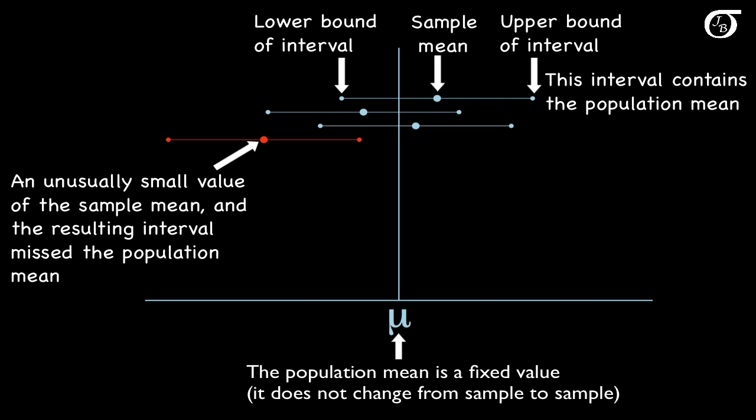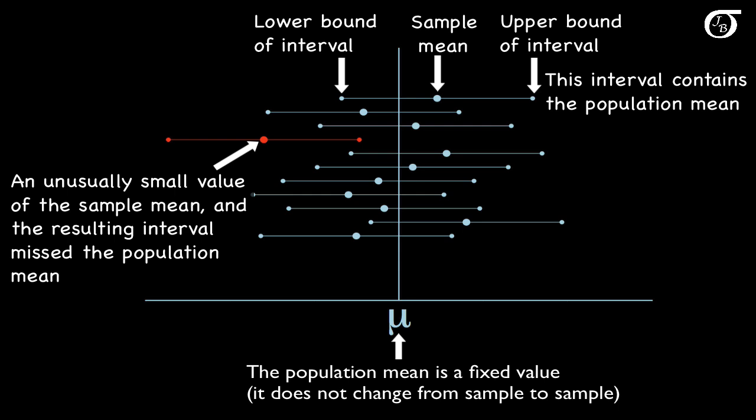If we repeatedly draw samples from the population and calculate a 95% confidence interval for mu for each sample, some of these intervals are going to capture mu, and some of them are going to miss. The underlying mathematical theory tells us that 95% of the intervals calculated in this manner will capture mu, and 5% of the intervals will miss. In practice we are only going to draw one sample, and thus we're only going to have a single confidence interval for mu. We're not going to know with certainty whether our interval captured mu or missed, but we can be 95% confident that our interval was one of those that captured mu.